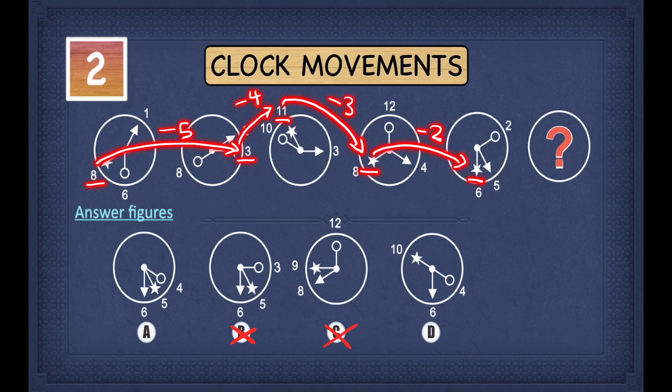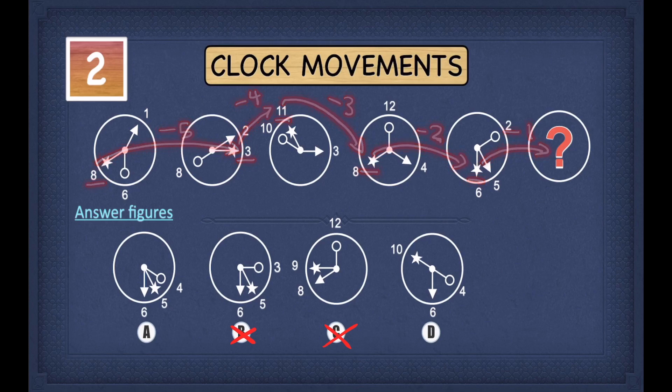Notice the pattern: each time you do 1 less than the previous step — first minus 5, then minus 4, then minus 3, then minus 2. So following this pattern, we take away 1 from 6, giving us 5.